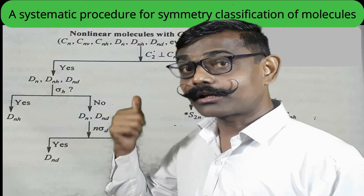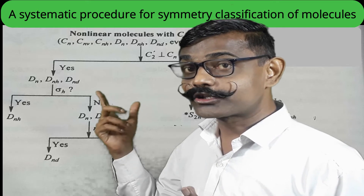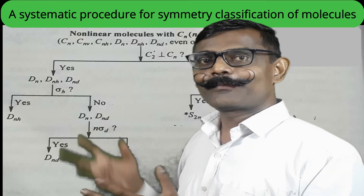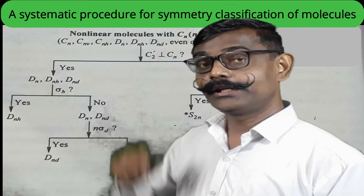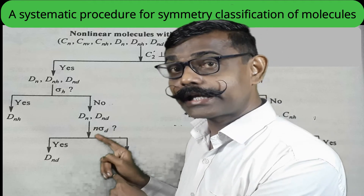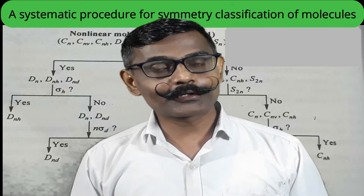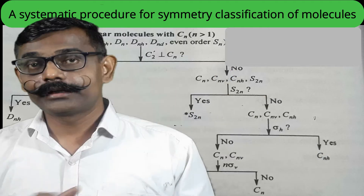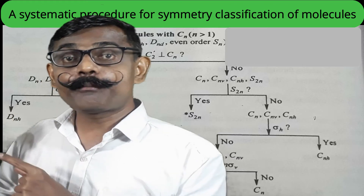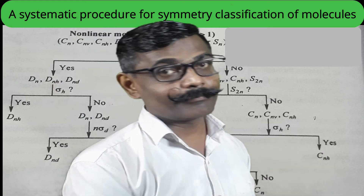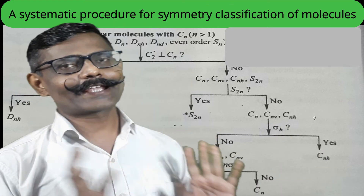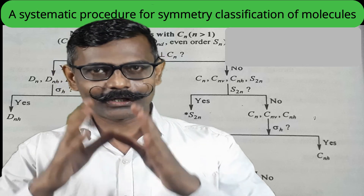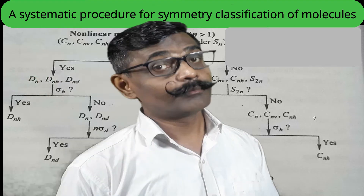In the dihedral case, we first checked perpendicular C2 axes, then horizontal planes, then dihedral planes — not vertical planes — to distinguish. Now for the other branch: if subsidiary C2 axes are not present, the possible point groups are Cn, Cnv, Cnh, and S2n. Ask: is there an improper axis of rotation S2n? If yes, the point group is S2n. Note that as a consequence of S2n, a proper Cn axis can also be found, but the major role is played by S2n.